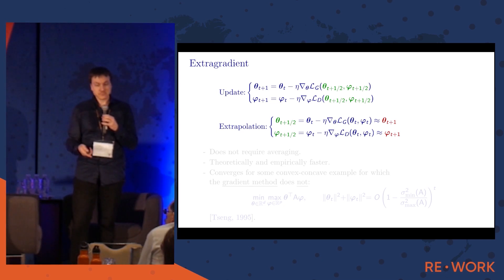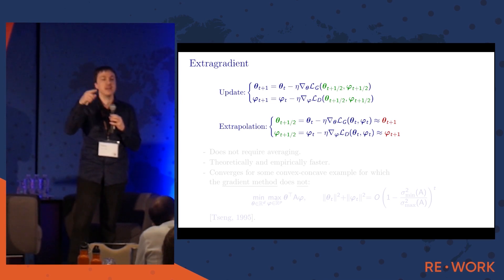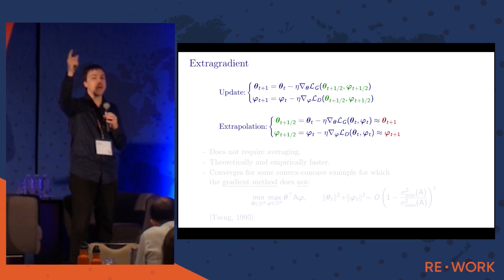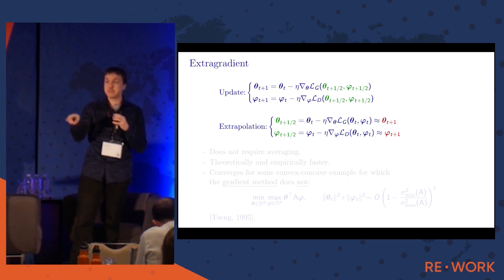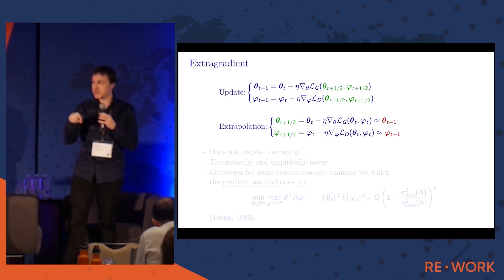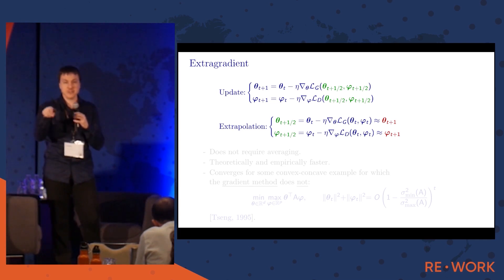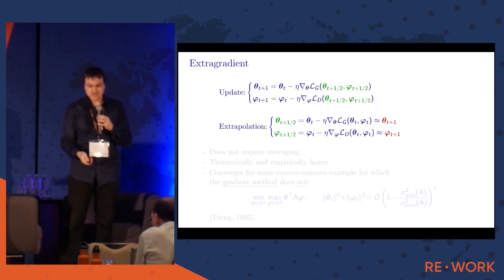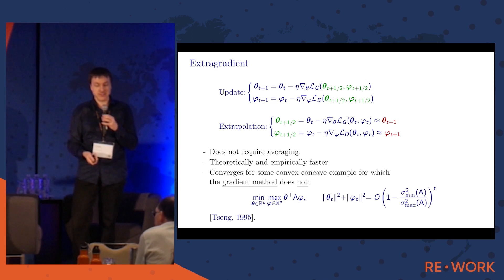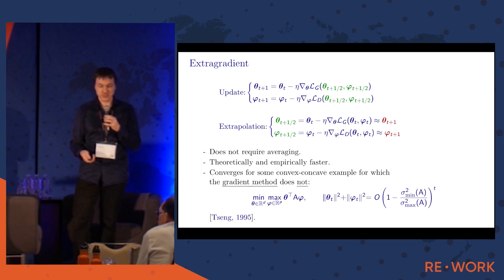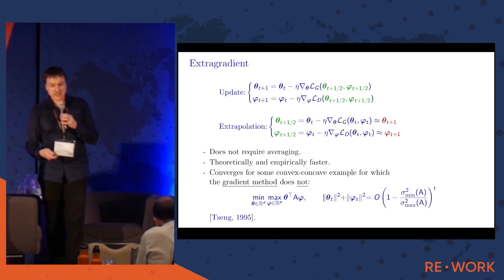You can think of the extrapolation step as a look-ahead: where is my opponent going to move? Then I move according to that information. This is why it stabilizes the algorithm — instead of spiraling, you actually converge. It turns out this method is both theoretically and empirically faster than the gradient method, and it converges on some problems where the gradient method would not converge.